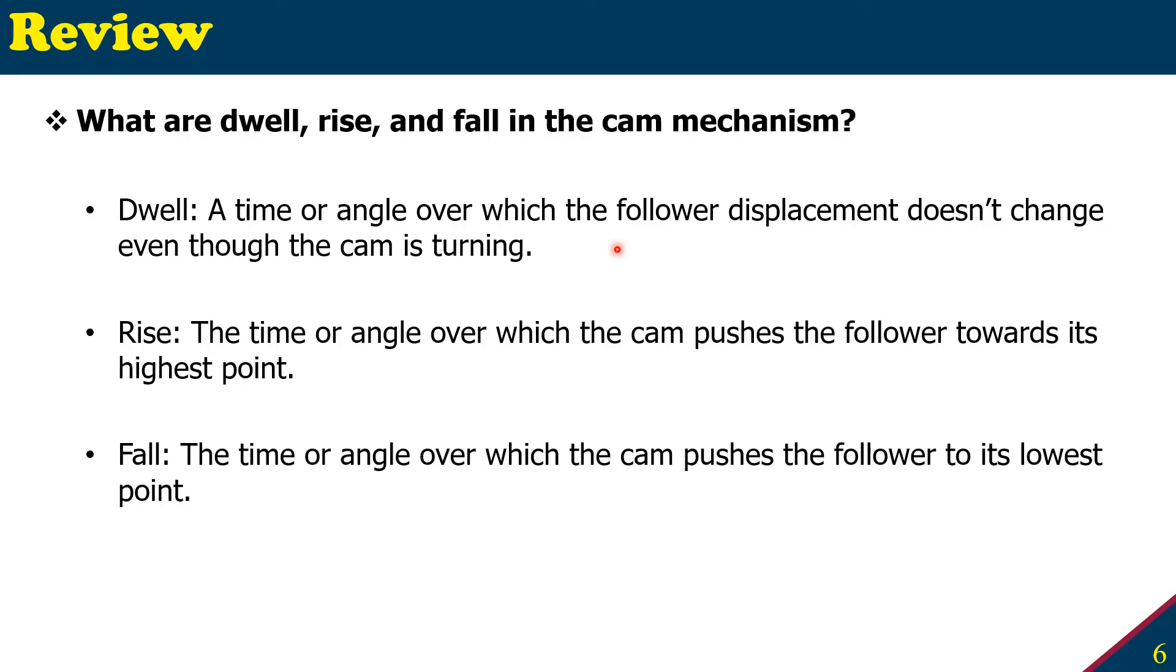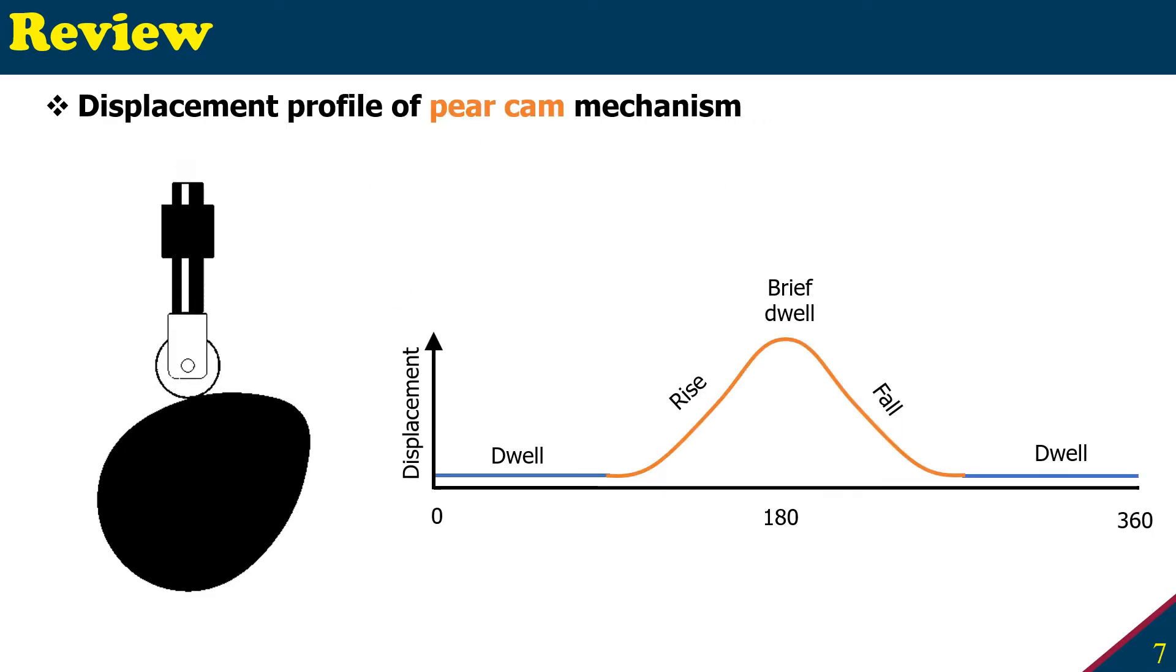Now let's look at how these terms apply to our four different types of cam mechanisms. The first one that we're going to study is the pear cam mechanism. It is called pear cam because it has a pear shape. You see it's circular on one side and kind of oval on the other side.